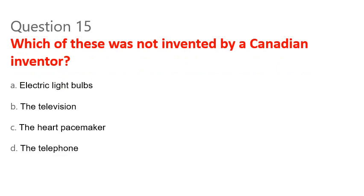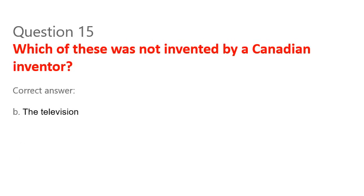Question 15. Which of these was not invented by a Canadian inventor? A. Electric Lightbulbs. B. The Television. C. The Hard Pacemaker. D. The Telephone. Correct answer: B. The Television.